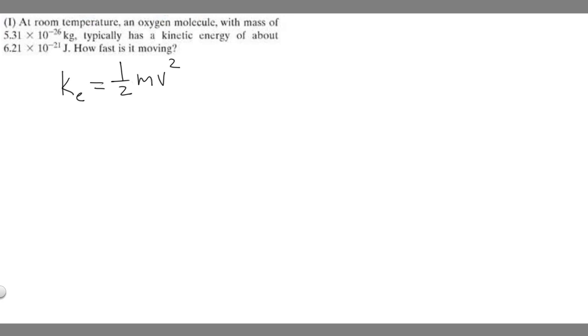We want to manipulate this equation and solve for V. If I multiply both sides by 2, you're going to get 2 K sub E is equal to, and that's going to get rid of the one half, M V squared.